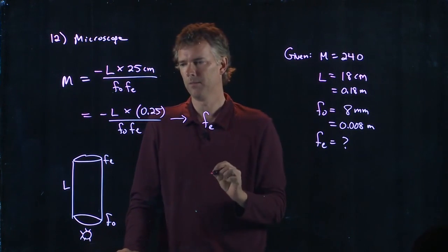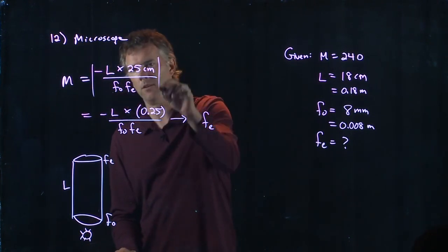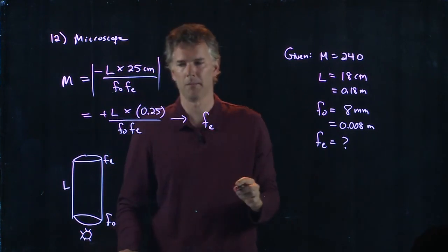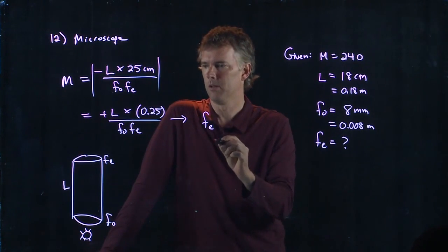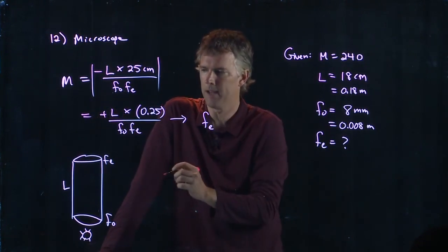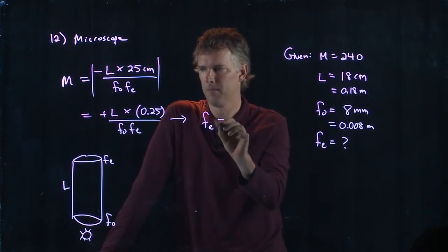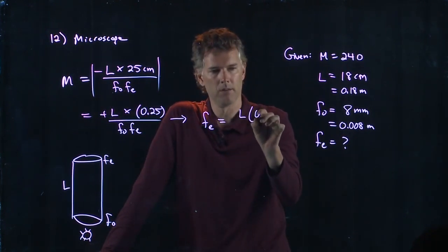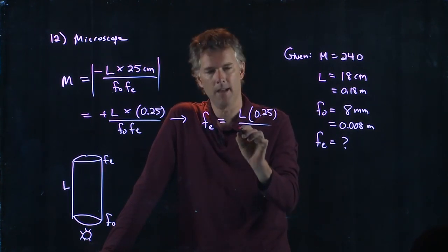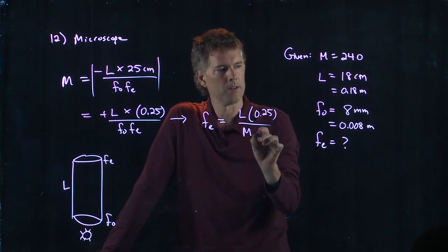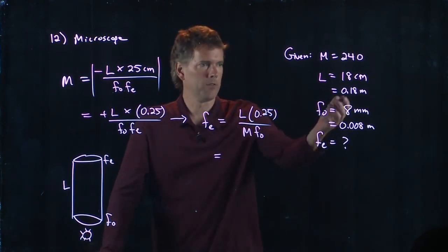F of the eyepiece, and just ignore the negative sign. We're just going to worry about the magnitude here. So we'll make that a positive. F of the eyepiece is going to be what? I got to multiply across by FE and then divide by M. So I just trade places with the FE and the M. So it becomes L times 0.25 divided by M times FO. And now I have all those numbers.